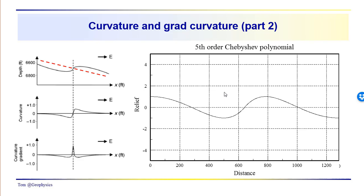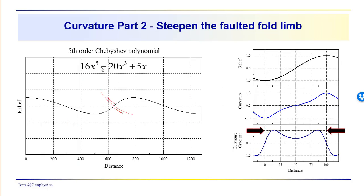What we mentioned last time was to take a look at a Chebyshev polynomial — a simple fifth-order polynomial. You can see that we have a tighter fold here, and we'll just go through this calculation. We'll calculate the curvature and the curvature gradient and see if we can get close to the example. This is our inflection point here, and this is the polynomial expression for the Chebyshev polynomial. It consists of just the odd powers of x with some coefficients. So again, at the inflection point, we assume we might have a fault coming through the limb of this anticline-syncline pair.